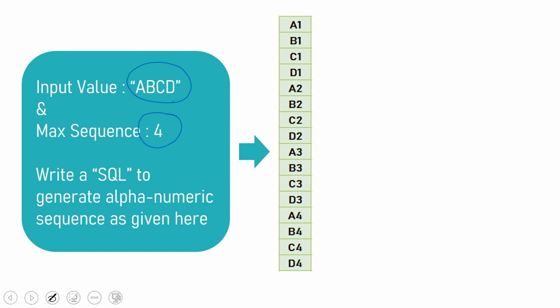For example, the string a, b, c, d has to be repeated 4 times like a1, b1, c1, d1, a2, b2, c2, d2, and here is the third set and here is the fourth set. This is the expectation.